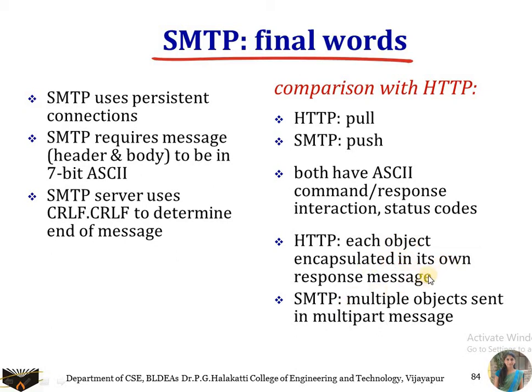In HTTP, each object is encapsulated in its own response message. In SMTP, a single email message can contain multiple objects — such as text, audio, and video files — all considered part of one message. In HTTP, if you want a text object and an image, separate connections and messages are needed for each object, so they cannot be transmitted in a single response.